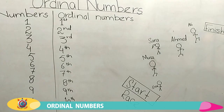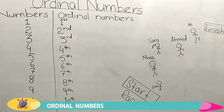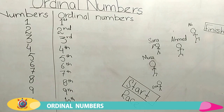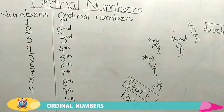To understand it better, let's have a look at an example of a race competition. Five children participated in a race. Now, look at the board and tell me their positions.